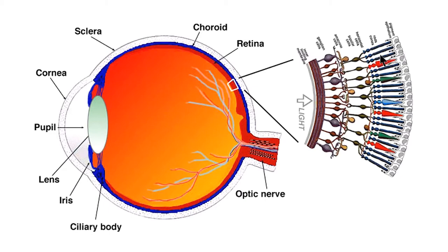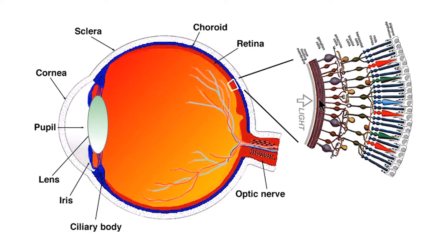Light coming in has to go all the way through these layers to begin the process — it's just inside out from how a logical person would have designed it for the best visual acuity. Going backwards from the phototransduction moment, information passes back to the bipolar layer, then to ganglion cells of different sizes and shapes doing other types of visual processing, and finally the axons from these individual ganglion cells form a nerve fiber layer on the inner surface of the retina.